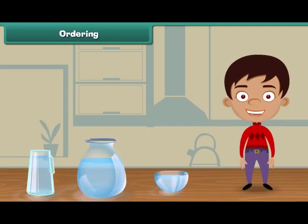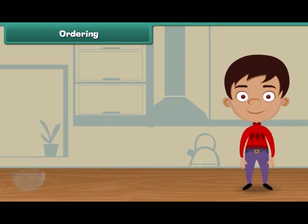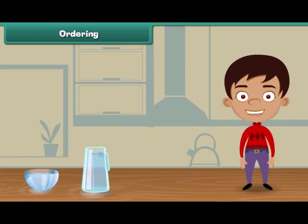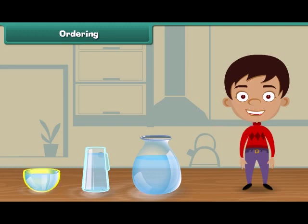Let us now arrange these vessels in increasing order. Bowl comes first because it holds the least water. The next in the row is the jar as it holds more water than the bowl. At last we place the pot because it holds more water than the bowl and the jar.